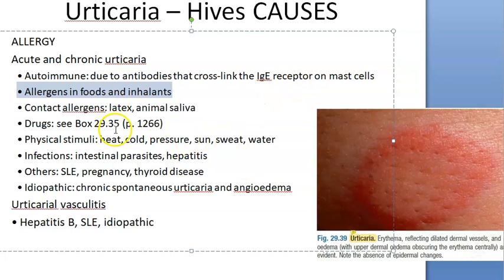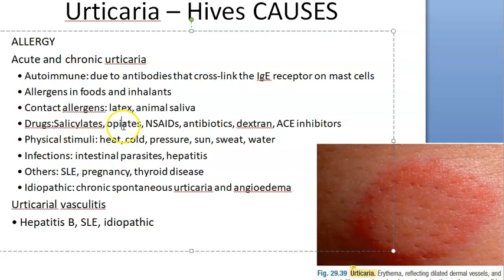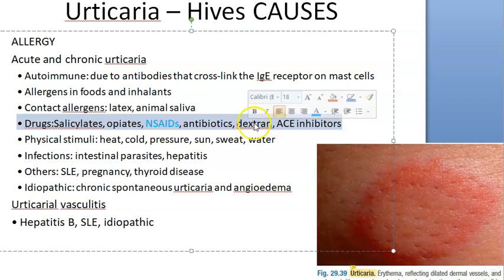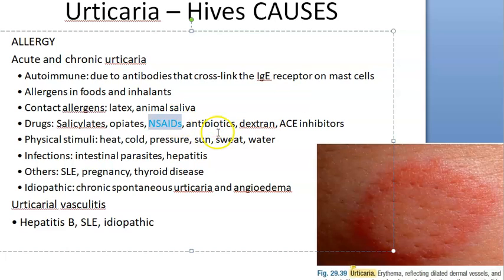Some allergens like food, contact allergens such as latex, animal saliva, and drugs can cause urticaria. The drugs that can cause urticaria include salicylates, opiates, NSAIDs — you can just blame NSAIDs. Also antibiotics, dextran (which is a colloid), and ACE inhibitors. So salicylates like aspirin, NSAIDs like ibuprofen, antibiotics, dextran, ACE inhibitors, and opiates — all these can cause urticaria.